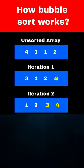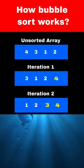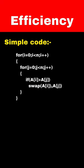If you visualize it, it's like bubbles coming to the surface. First the largest bubble will come, then the second largest, and so on. Bubble sort is the simplest sorting algorithm and is very easy to implement.